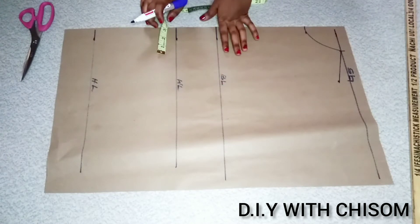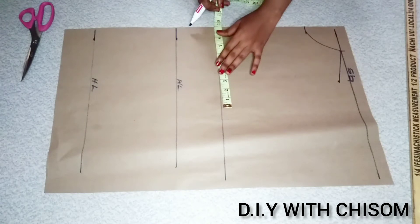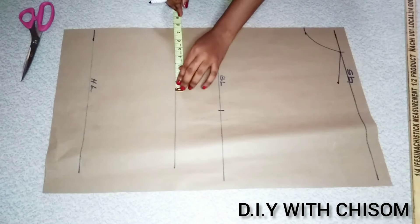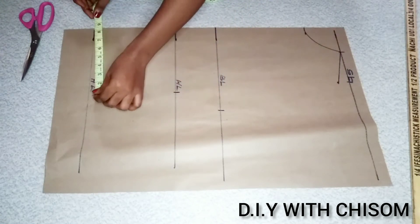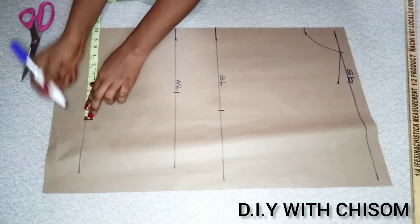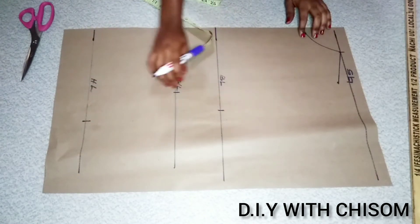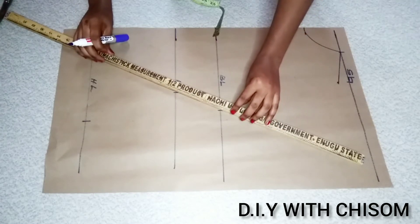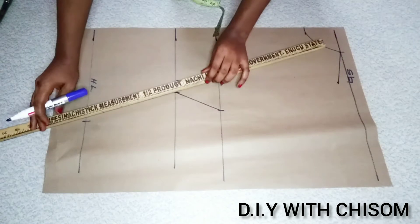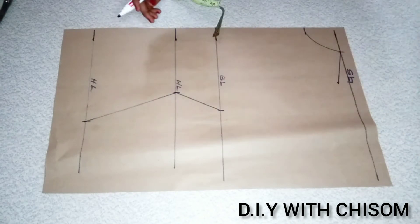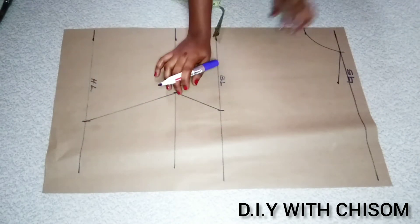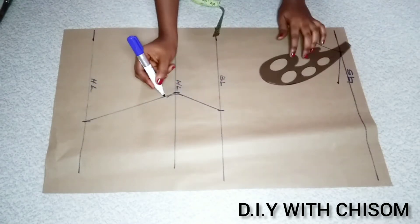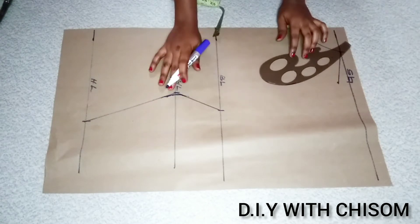Now I'm going to mark all my horizontal measurements. The first is my bust circumference — divide your bust circumference by four and mark it. Your waist circumference divided by four — mine is 7.5, and I mark it. Then hip circumference divided by four — mine is 10.2 — mark it and connect with a straight ruler. After connecting, I use my curved ruler to shape the waistline a little bit, because our body is curved, so you add a little curve. You can use your freehand or your curved ruler.